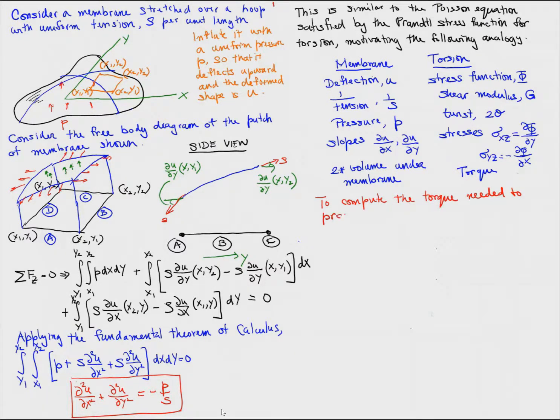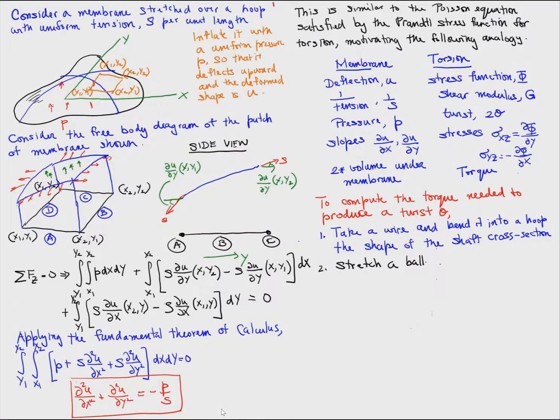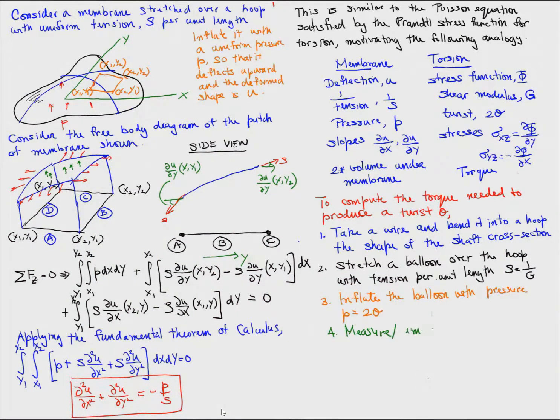So if we want to compute the torque needed to produce a twist theta, we can use the membrane analogy in the following way. We take a wire, and we bend it into a hoop, which is the same shape as the shaft cross-section. We stretch a balloon over the hoop, with tension per unit length S equals 1 over G, and then we inflate the balloon with pressure P equals twice theta,